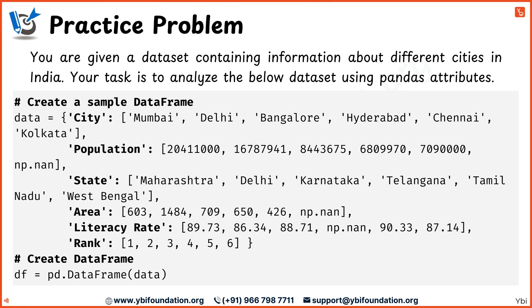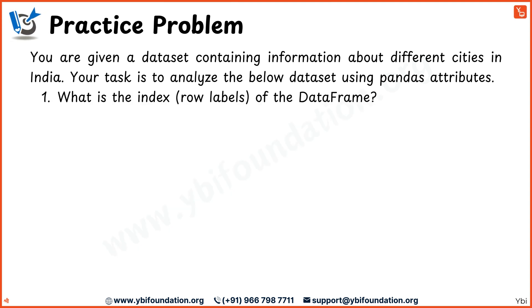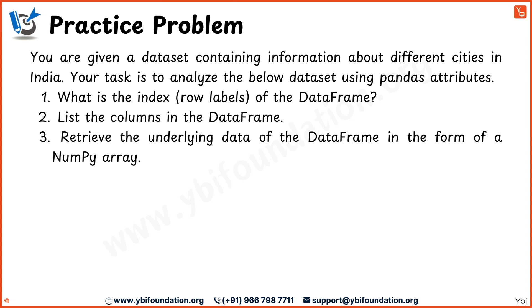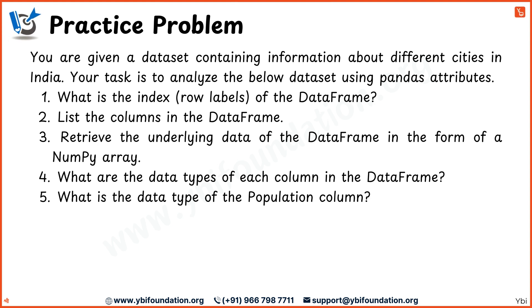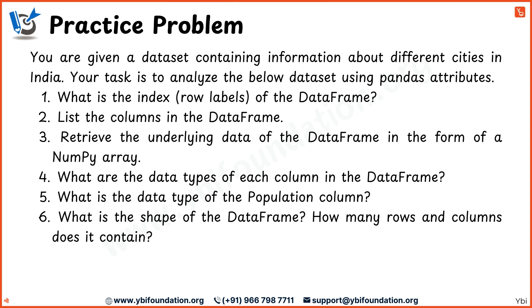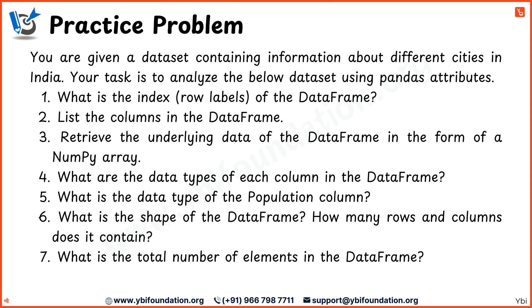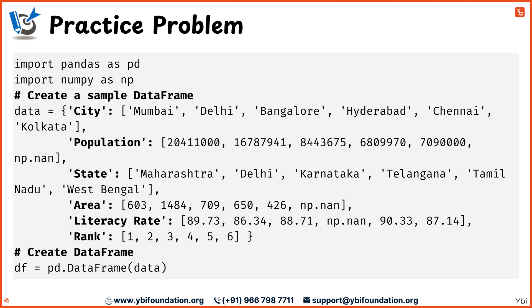Let's practice and learn by doing. You are given a dataset containing information about different cities in India. Your task is to analyze the dataset using pandas attribute functions. Question 1: What is the index or row labels of the DataFrame? Question 2: List the columns in the DataFrame. Question 3: Retrieve the underlying data as a numpy array. Question 4: What are the data types of each column? Question 5: What is the data type of the population column? Question 6: What is the shape of the DataFrame — how many rows and columns does it contain? Finally, what is the total number of elements in the DataFrame? Use pandas attributes to explore the structure of your DataFrame. To download the correct answers with explanations of all the practice problems for free, follow the instructions given in the discussion or comment section.